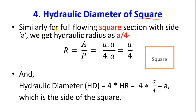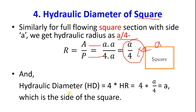This also holds for a full-flowing square. Hydraulic radius R equals A by P. Area is a×a and perimeter is 4×a, where a is the side length. This gives R = a/4. Multiplying by 4 gives hydraulic diameter equal to a, which is the side of the square. So hydraulic diameter equals the side length for a full-flowing square.